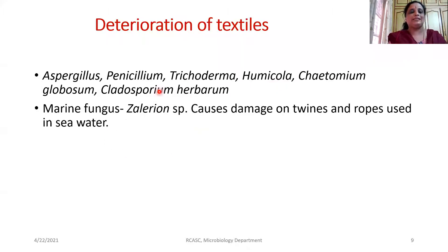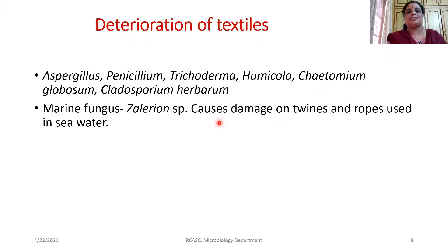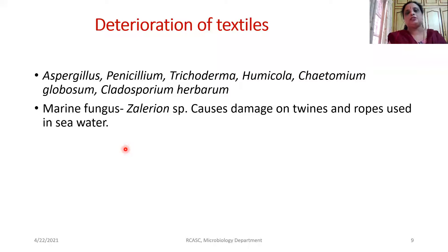One important interesting fact is the marine fungus Xalerion species, which is an aquatic fungus that has the ability of damaging the twines and ropes used extensively in building ships and boards. If these twines and ropes are extensively damaged by this particular fungi, it represents a significant economical loss.